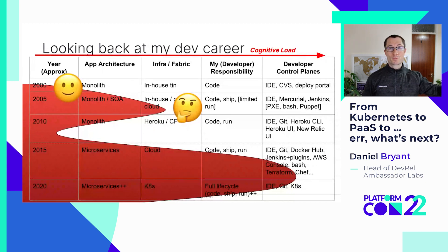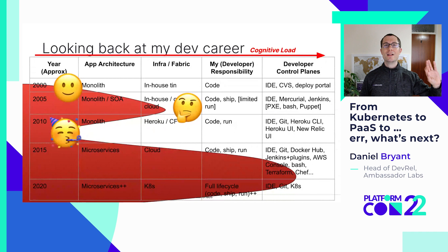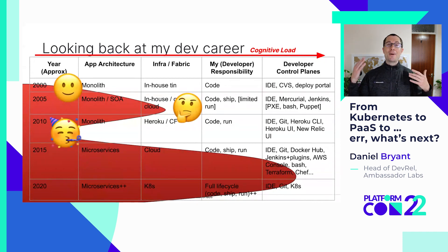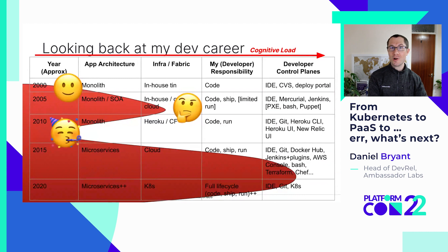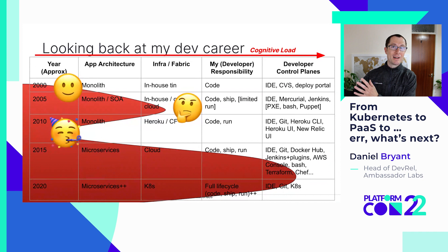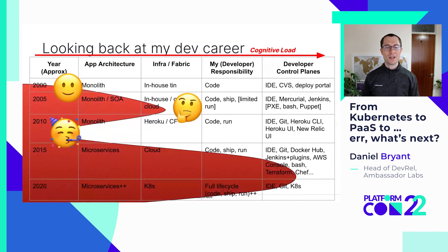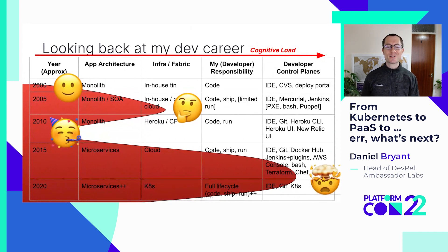I went back to using proper PaaS — platform as a service — for a while. Initially Cloud Foundry with Java, and then Heroku with Ruby on Rails. As a developer, happy days. I was coding in my IDE, didn't think too much about shipping — just 'heroku push' or 'cf push' — and then when stuff went wrong, I was in the New Relic dashboard looking at profiling, seeing what's going on. It was pretty easy as a developer; life was pretty good.